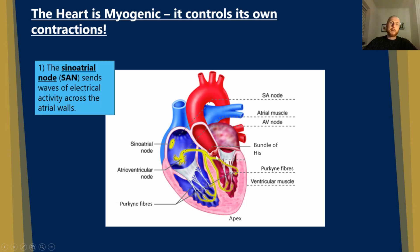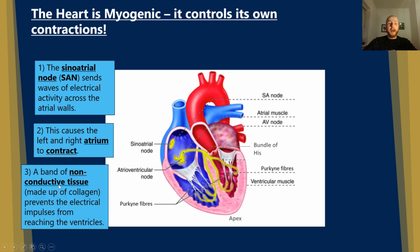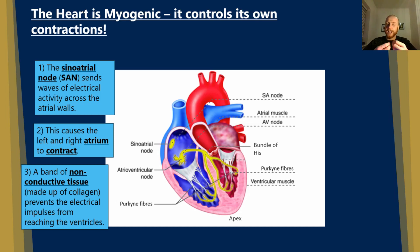Let's go through the steps one by one. Number one, the sinoatrial node, abbreviated to the SAN, sends waves of electrical activity across the atrial walls. This causes the left and right atrium to contract together at the same time, once they've filled up with blood. Number three, a band of non-conductive tissue separates the atria from the ventricles, preventing that electrical impulse from reaching the ventricles before they've had a chance to fill up. That non-conductive tissue is made from collagen.